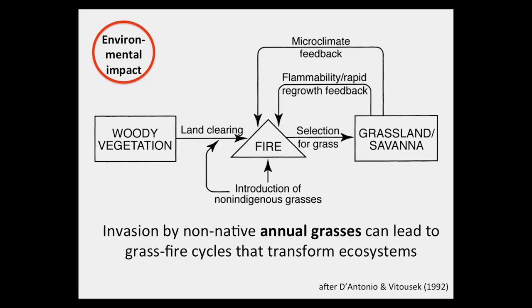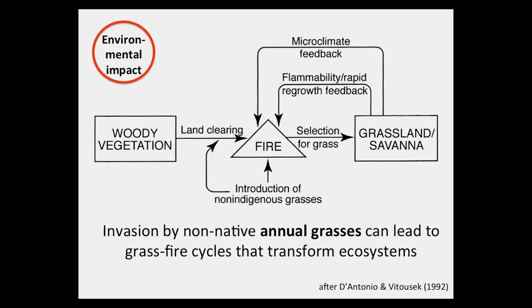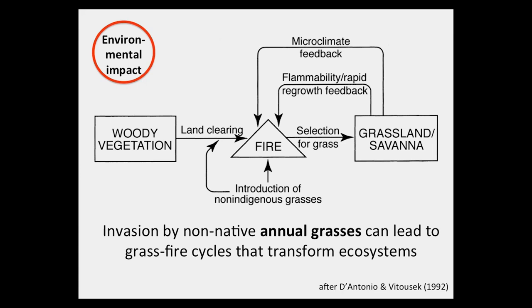I want to talk about several examples of highly damaging invasions — not to suggest that all introduced species are incredibly harmful, but to emphasize that some biological invasions can result in large environmental impacts. An example is grass fire cycles that result from the invasion by non-native annual grasses, which can transform ecosystems through positive feedback loops resulting from the flammability of grasses and their ability to sustain fires that kill woody vegetation. Grass fire cycles are an important problem throughout semi-arid ecosystems in many parts of the world.